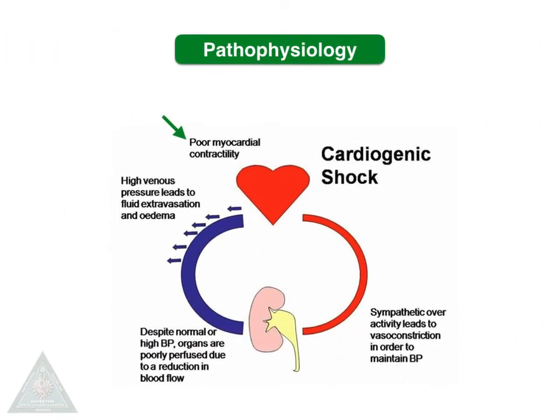Coming to the pathophysiology of cardiogenic shock, whenever there is poor myocardial contractility, the venous pressure will be increased and leads to fluid extravasation and edema, which in turn results in reduced blood volume. For counteraction, sympathetic overactivity leads to vasoconstriction in order to maintain blood pressure.